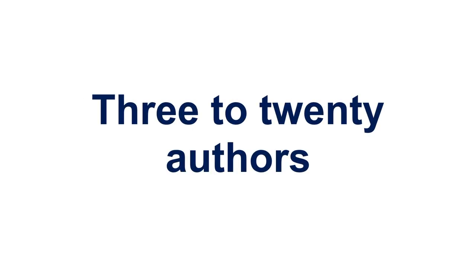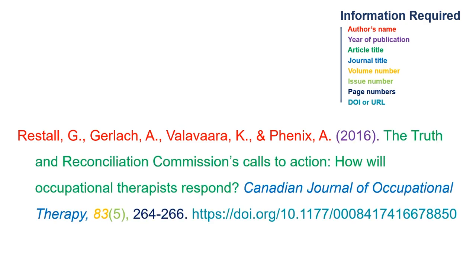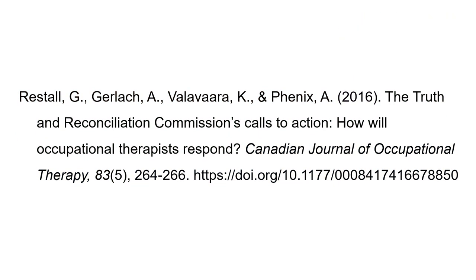When citing a journal article with three to twenty authors, you will again list the authors by last name, comma, and initials. Separate each author name with a comma, and include an ampersand before the name of the last author. The rest of your citation will be completed the same way as before. Your APA citation for a journal article with three to twenty authors will look like this.